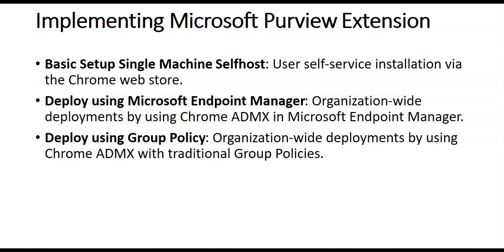For deploying with Group Policy, you create a computer or user configuration policy under administrative templates to configure this extension under Google Chrome settings. Enter the value for the public endpoint or network path from which the Chrome extension will be deployed, and it will take effect on an OU — either a computer or a user OU.